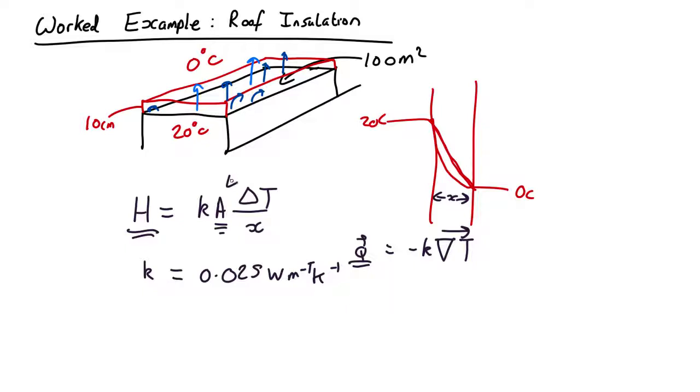What's the area? We'll say 100 square meters. Delta T is going to be the difference between the inside and outside.